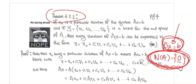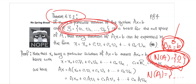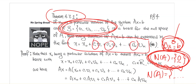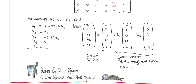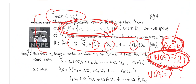If the null space of A is non-trivial — it contains non-zero vectors — and you can find a basis of the null space consisting of non-zero vectors, then the solution is given by a particular solution plus a linear combination of those basis vectors with arbitrary constants. That is why you have infinitely many solutions. So if the null space of A is non-trivial and the system has solutions, it will have infinitely many solutions.